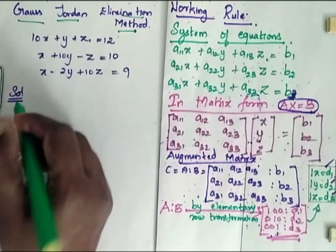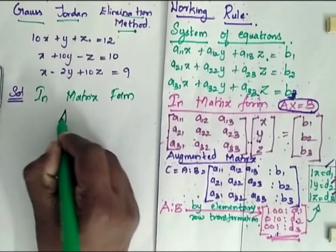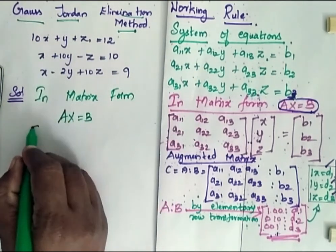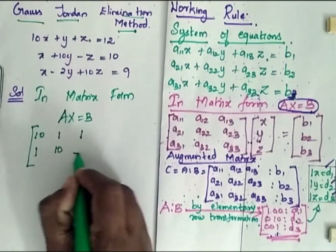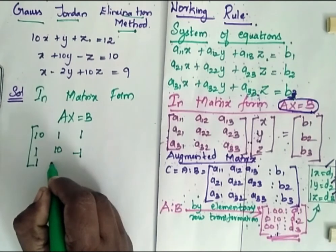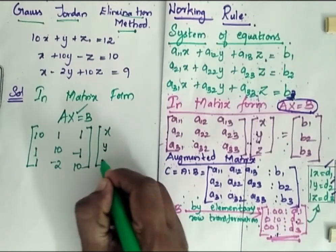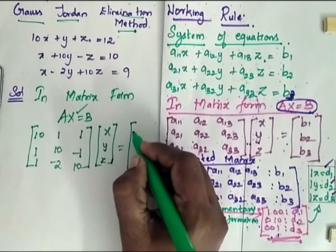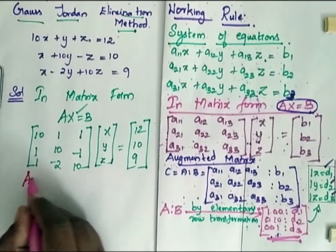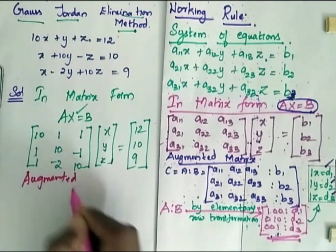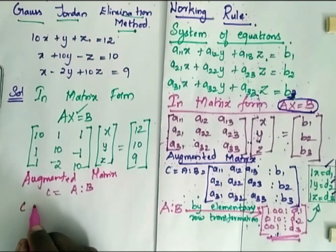Now when we come to the solution, first we have to write this in matrix form. AX is equal to B. So it is 10, 1, 1, 1, 1, 1, 10, minus 1. Then here it is 1, minus 2, 10. My X is X, Y, Z. Then B is 12, 10, 9. Now I go for augmented matrix. My augmented matrix C is equal to A is to B. So now my C is.